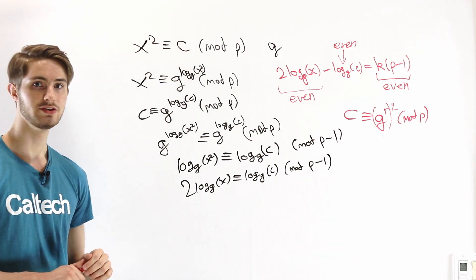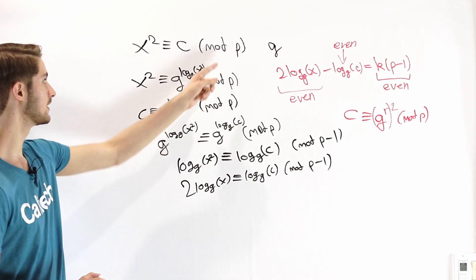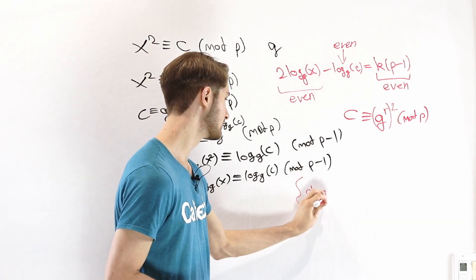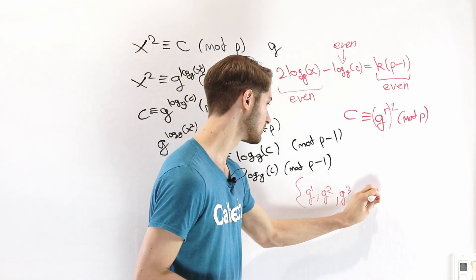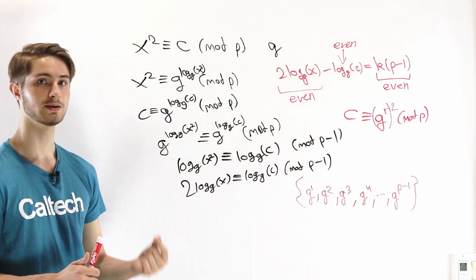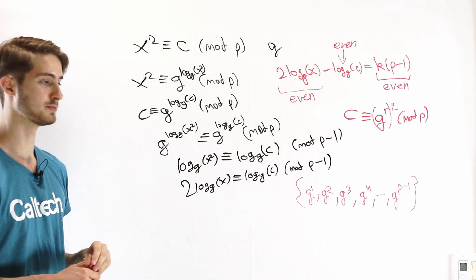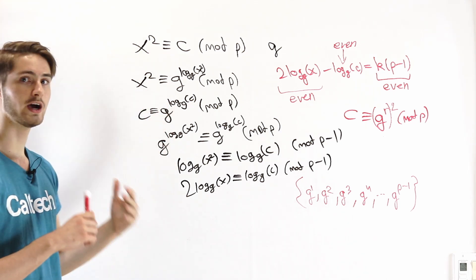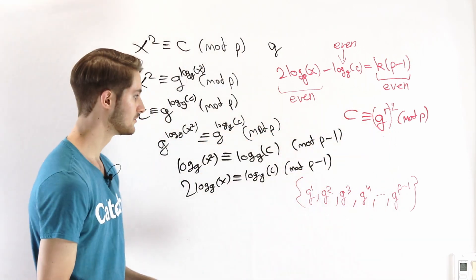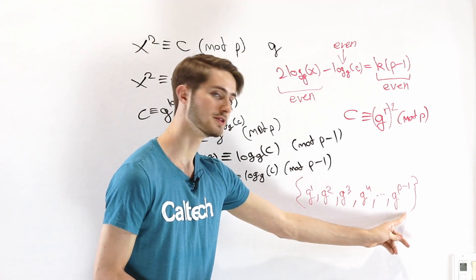The last thing we'll do is use indices to prove exactly how many quadratic residues there are mod any prime. We look at the set of all possible powers of the primitive root g: g to the first, g squared, g cubed, g to the fourth, and so on up to g to the p minus 1. This gives us all numbers mod p except zero, and they are all distinct. Since a number is a quadratic residue if and only if it has even index, we count the even-indexed powers: g squared, g to the fourth, g to the sixth, and so on up to g to the p minus 1 — which is even. That's half of the numbers.